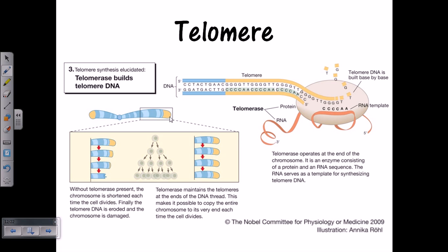To cope with the end replication problem, cells use an enzyme called telomerase. This telomerase enzyme can build the repetitive DNA sequence found at the telomeric region. The telomerase enzyme has an RNA template associated with itself which acts as a template to synthesize the rest of the DNA. Using this RNA template, it incorporates newer DNA nucleotides and starts elongating the terminal regions of the DNA.